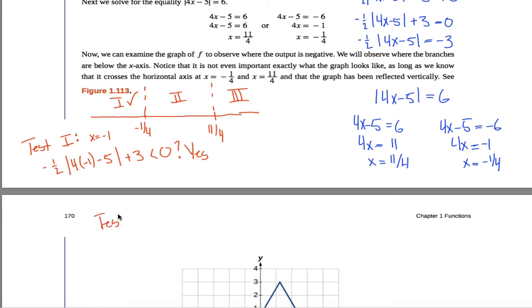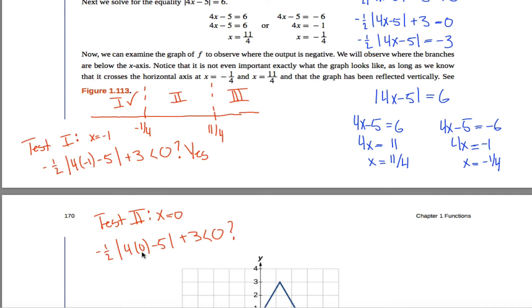What about region 2? Pick any number between negative one-fourth and eleven-fourths. Since negative one-fourth is negative and eleven-fourths is positive, 0 must be in between, so I'll test that. Plug 0 into the inequality: 4 times 0 is 0; minus 5 is negative 5; absolute value of negative 5 is positive 5; negative one-half times positive 5 is negative 2.5. Negative 2.5 plus 3 is positive 0.5 — a positive number, not less than 0. So no, 0 is not in my solution set, and none of the numbers in region 2 are solutions.